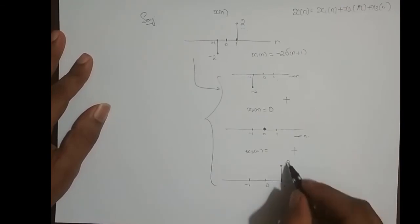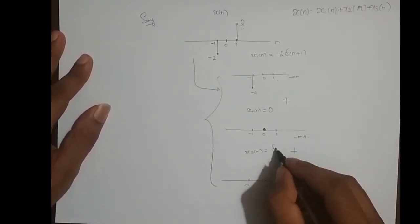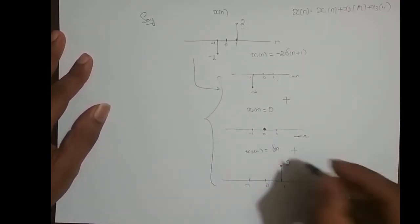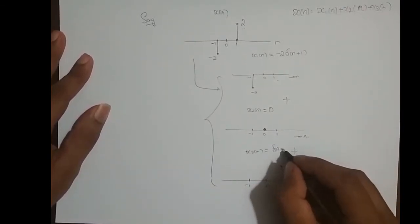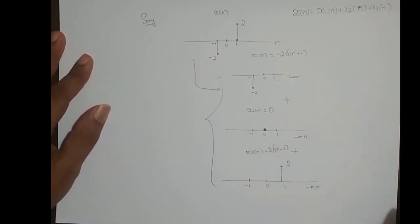And the sample at n equal to 1 with amplitude 2 is delta of n shifted right one time and scaled by a factor of 2 — so that is 2 times delta of n minus 1.